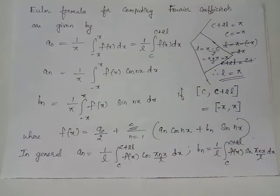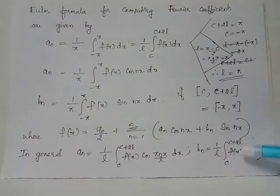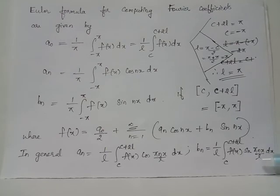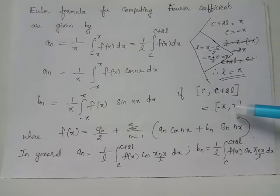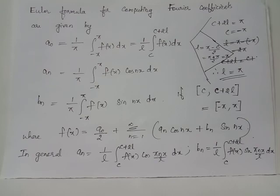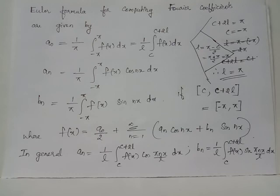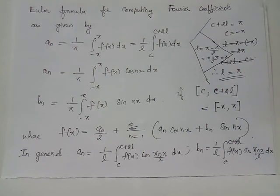Similarly, we have bₙ equals 1/l times the integral from c to c+2l of f(x) sin(πnx/l) dx. For the interval [−π, π], l = π, and sin(πnx/π) becomes sin(nx). Therefore bₙ equals 1/π times the integral from −π to π of f(x) sin(nx) dx. The Fourier series expansion for f(x) on [−π, π] is: f(x) equals a₀/2 plus summation from n=1 to infinity of aₙ cos(nx) plus bₙ sin(nx).